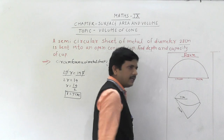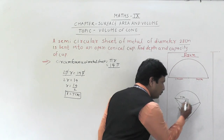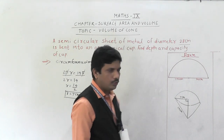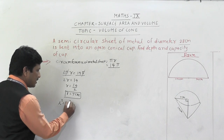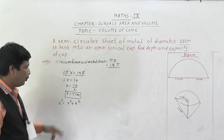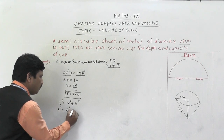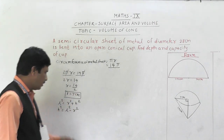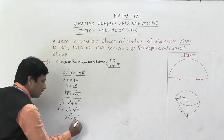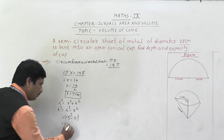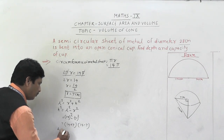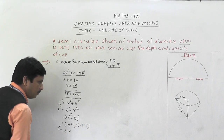Now we have radius = 7 cm and slant height l = 14 cm. Using l² = r² + h², we get h² = l² − r² = 14² − 7² = 196 − 49 = 147. Using the difference of squares: h² = (14+7)(14−7) = 21 × 7 = 147. Factorising: 147 = 7 × 3 × 7, so h = 7√3.